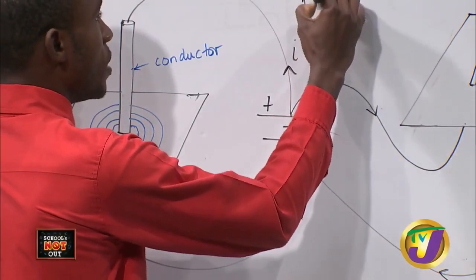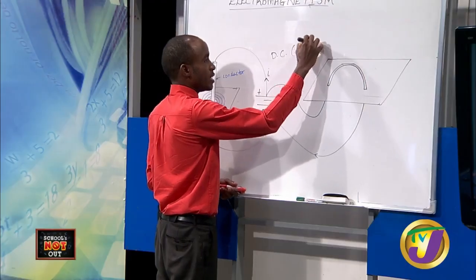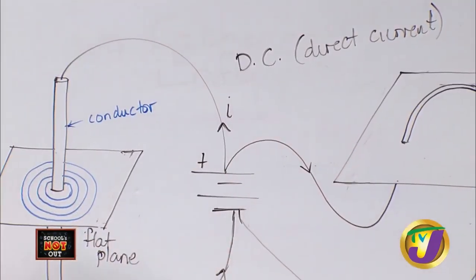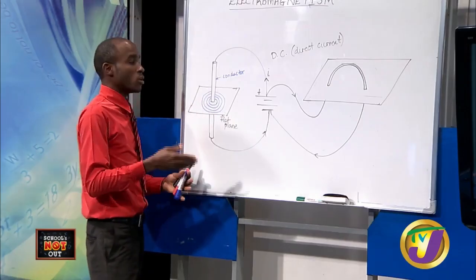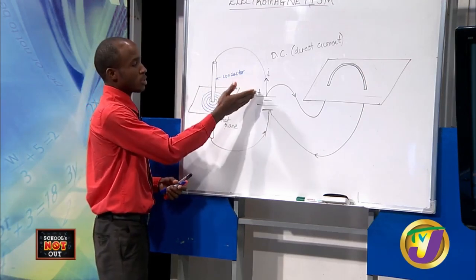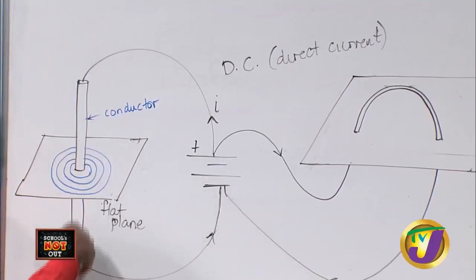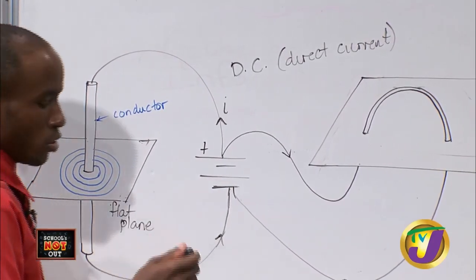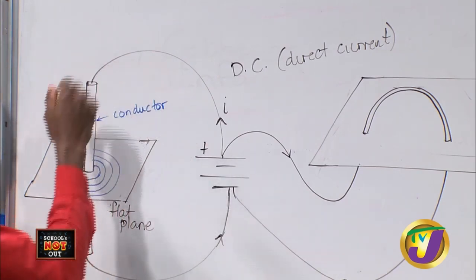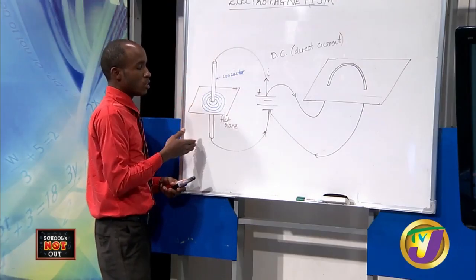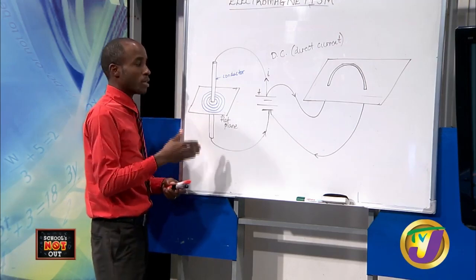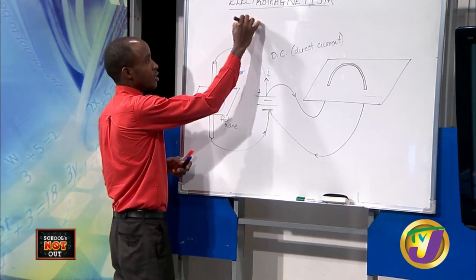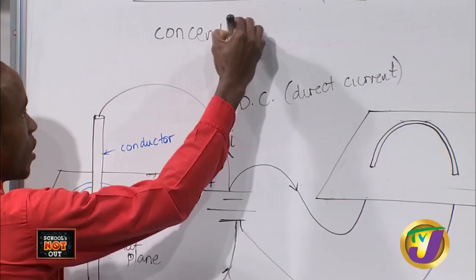This power source is considered to be a DC, or what we call a direct current power source. A direct current power source carries current in only one direction — from the plus terminal around to the negative terminal. We term that as conventional current. When this conventional current is carried through this conductor, we set up a magnetic field that goes around the conductor in what we call concentric circles.